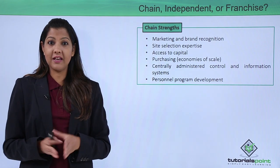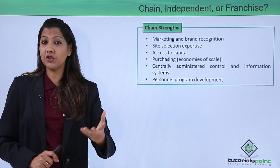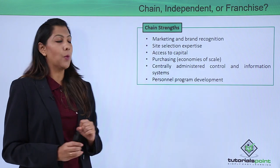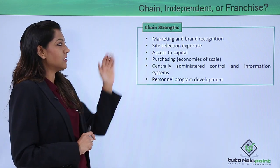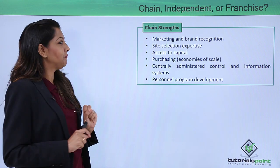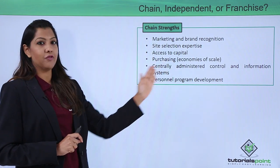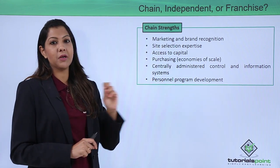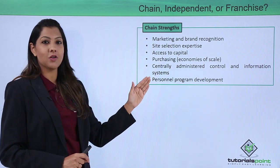Let's look at restaurant chains — whether independent or franchisee, and what works and what doesn't. The strengths of having a chain, like a McDonald's or KFC, include marketing and brand recognition, site selection expertise, access to capital, purchasing power, centrally administered control and information systems, and personal development programs for staff working in those chains. These are the key strengths of having a chain of restaurants.